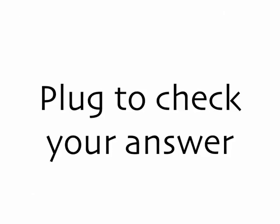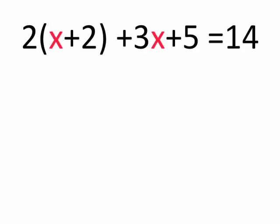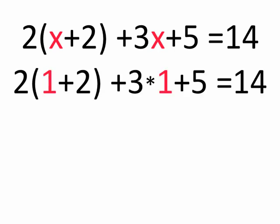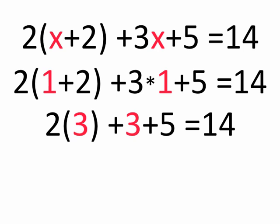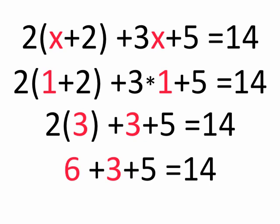How do we check that? We plug it back into our original equation, way back at the beginning. So this was my equation, 2 times the quantity x plus 2 plus 3x plus 5 equals 14. I replace the x's with 1's, so I have 2 times the quantity 1 plus 2 plus 3 times 1 plus 5 equals 14. First I do the stuff inside the parentheses. 1 plus 2 is 3. I have some multiplying going on here, 3 times 1 is still 3. 2 times 3 is 6, so I have 6 plus 3 plus 5 equals 14. That is true. 6 plus 3 is 9, plus 5 more is 14. Since 1, when I plug it in for x, makes the two sides of the equation be equal to each other, 1 is the solution to this equation.